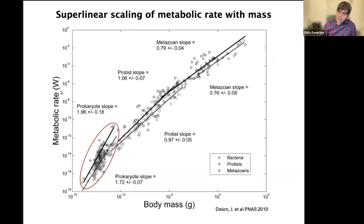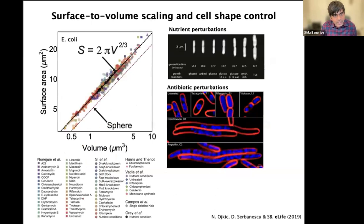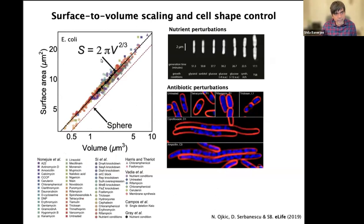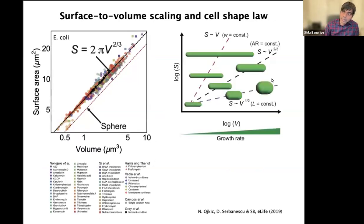Furthermore, bacteria are very adaptive — they can readily adapt their size and shape due to environmental fluctuations. What we and others discovered is that bacteria maintain robust geometric scaling laws between how surface area changes with volume in different growth conditions, the so-called shape law. Here we see data from E. coli following a robust shape equation in different growth conditions, where surface area equals two pi times volume to the power two-thirds, connected to the maintenance of aspect ratio in rod-like systems.